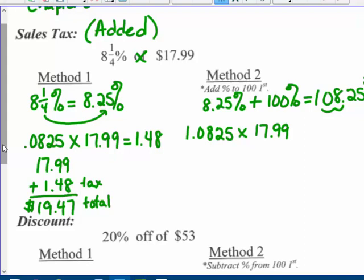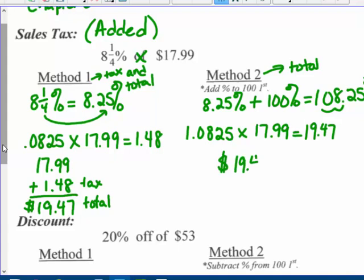Method one finds the tax first, then finds the total. Method two goes right to the total. When I multiply 1.0825 times $17.99, I get $19.47 right away. So method one: find the tax, add it on. Method two: add the tax percentage to 100% already to get the total.